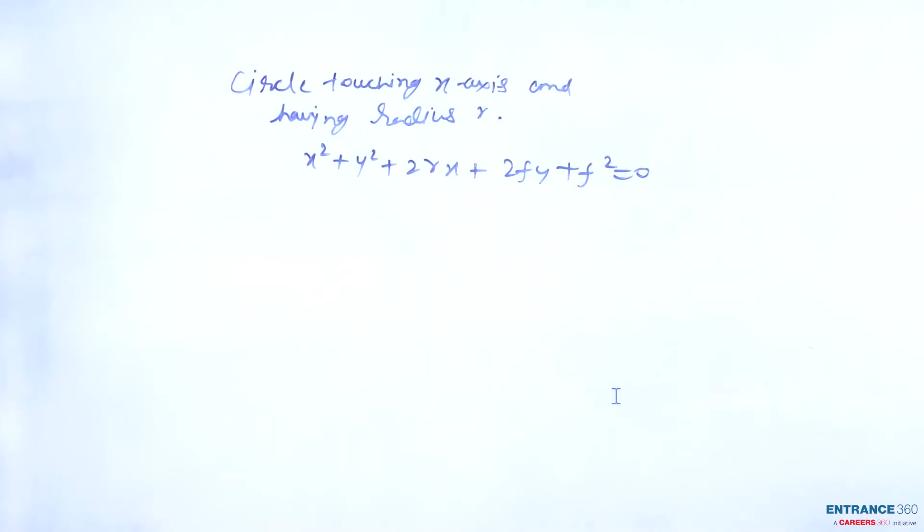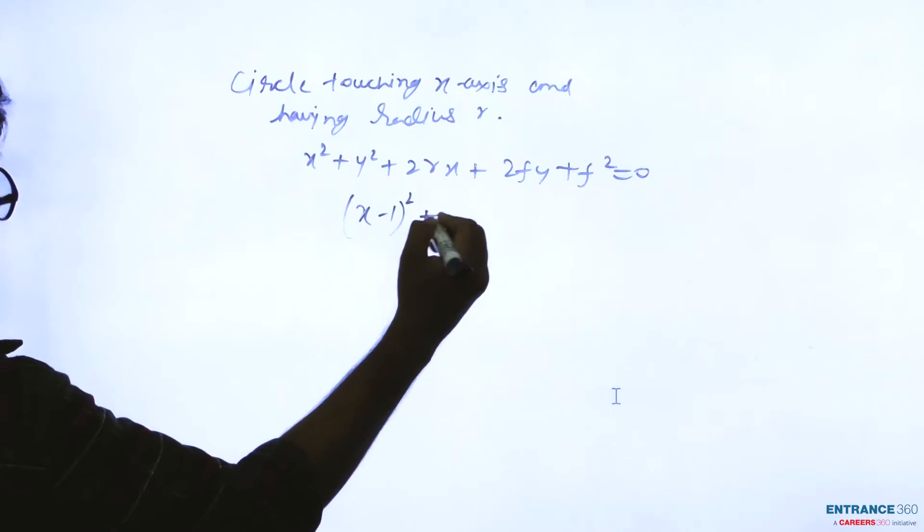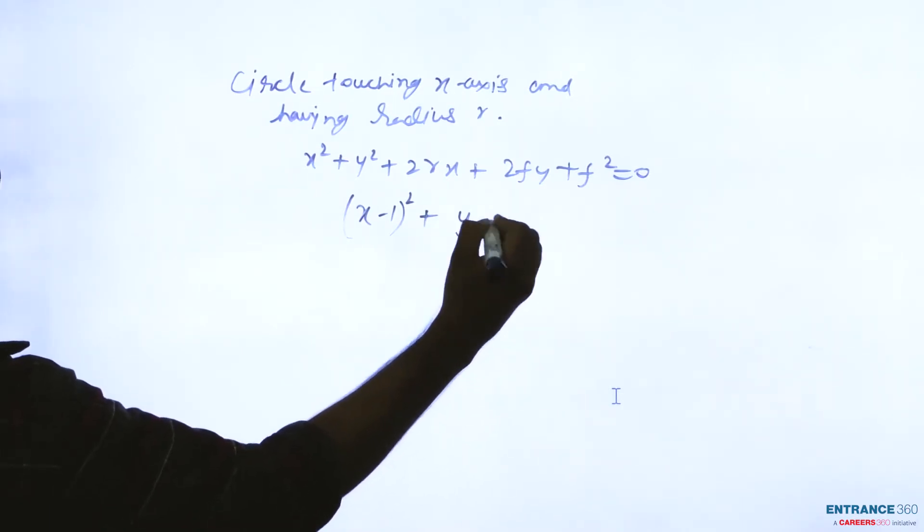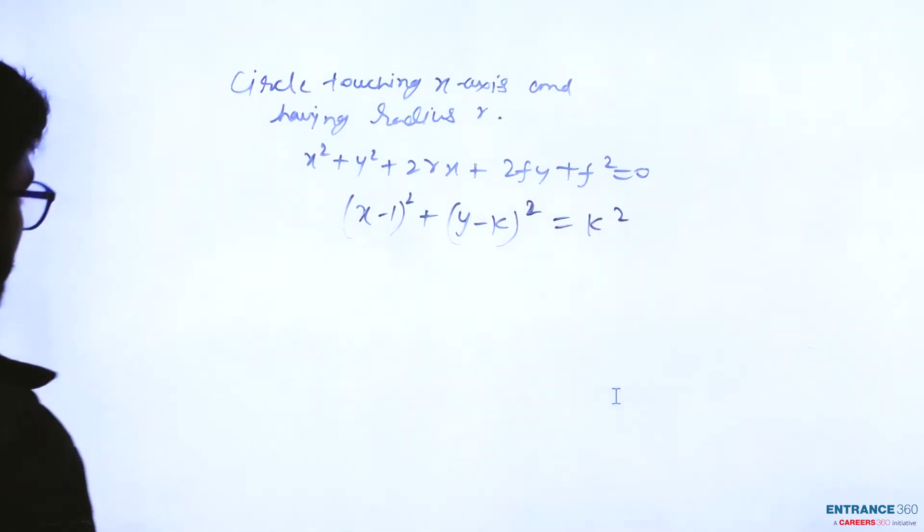It is a standard equation of the circle with the condition that circle touching x-axis and having radius r. As we know that (x - 1)² + (y - k)² = k².